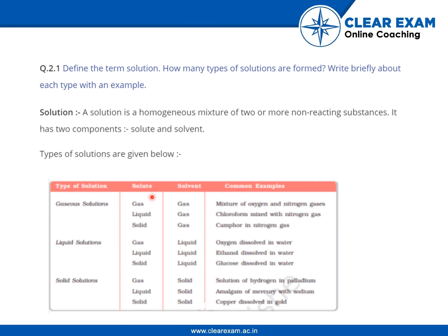If the solvent is gas, it is a gaseous solution. If the solvent is liquid, it is known as a liquid solution. And if the solvent is solid, it is known as a solid solution. We have examples for each, so you can refer to this figure.